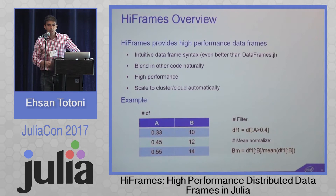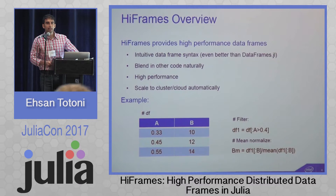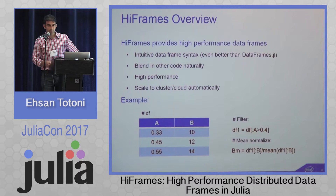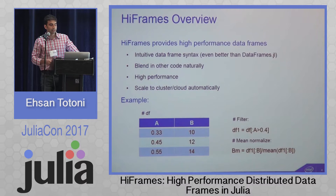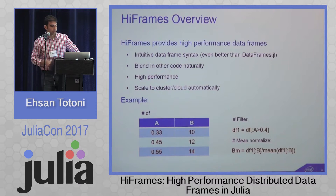Here's a quick overview of HiFrames. HiFrames provides high-performance data frames — essentially tables that can have various columns, where each column can have a different type than others. Our goals are: provide intuitive data frame syntax even better than Julia's DataFrames.jl; allow data frames to blend naturally into other code without function barriers; make them fast; and scale to large-scale clusters and cloud environments automatically.